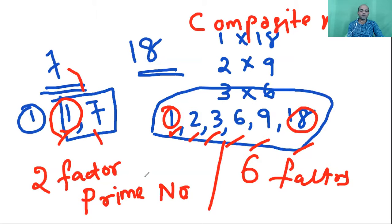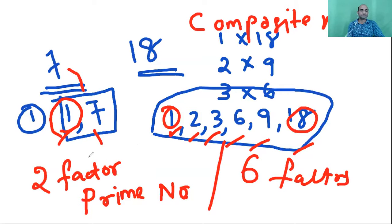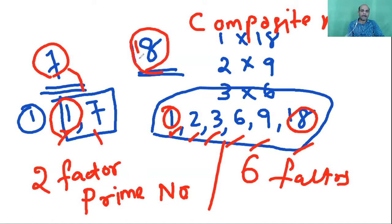Let me repeat once more: if a number has only two factors — 1 and the number itself — it is called a prime number. If a number has more than two factors, it is called a composite number. I hope you are all clear about what a prime number and a composite number are.